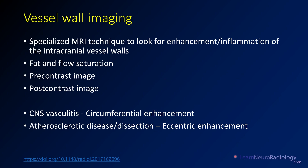Vessel wall imaging is a specialized MRI technique to look for enhancement and inflammation of intracranial vessel walls. It uses fat and flow suppression, with pre- and post-contrast images to see if the vessel wall itself is enhancing. In CNS vasculitis, you get circumferential enhancement — enhancement all the way around the vessel. In atherosclerotic disease, you tend to see eccentric enhancement, or enhancement only in the part affected by the plaque.